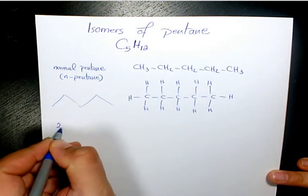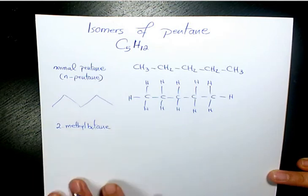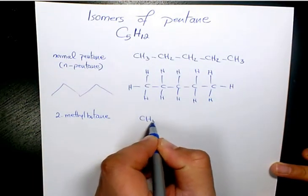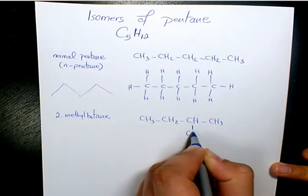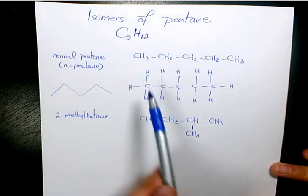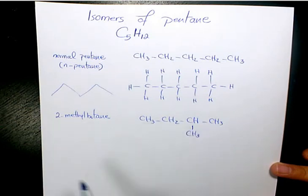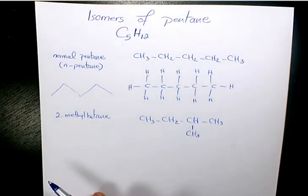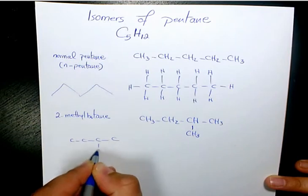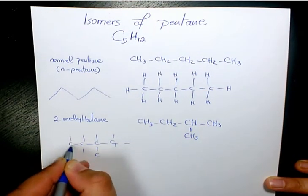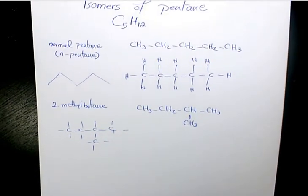The second one is going to be 2-methylbutane, which is going to be CH3-CH2-CH(CH3)-CH3. As you can see, this is C5H12 but here we have a branch, so that's why it's called 2-methylbutane. You can also have it shown with carbons surrounded by hydrogen atoms like that.